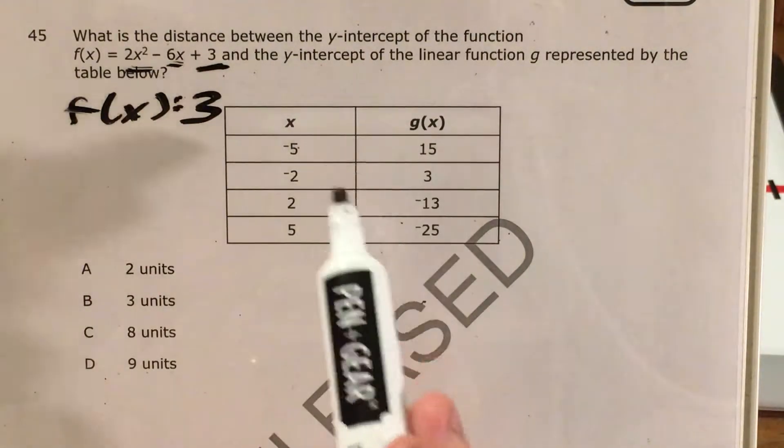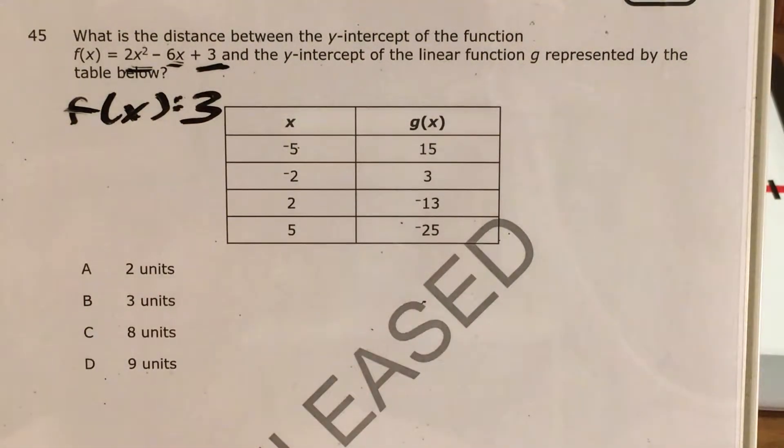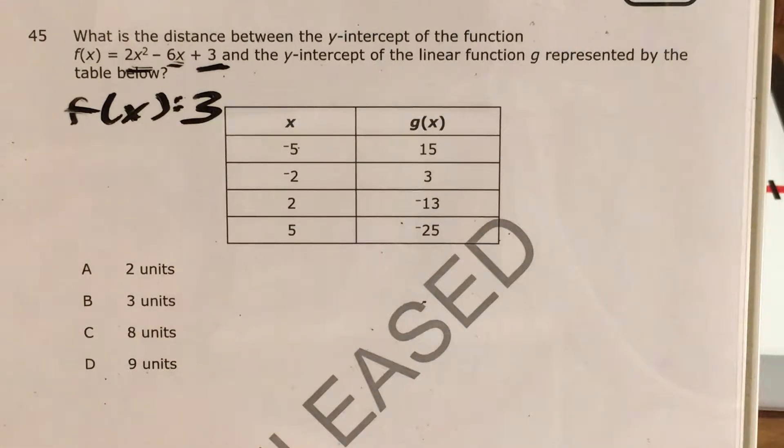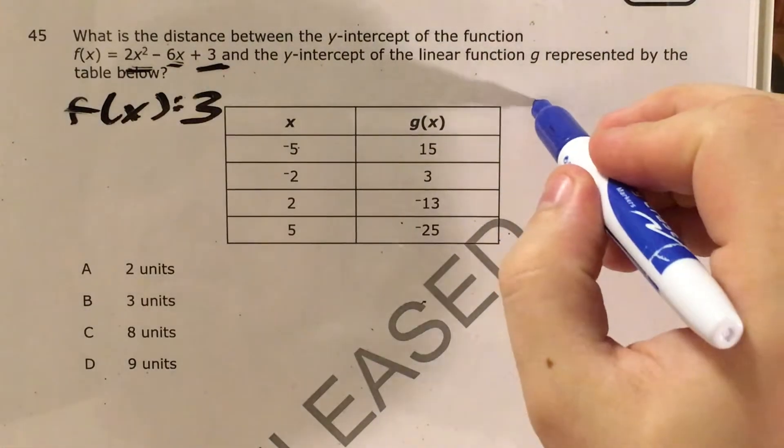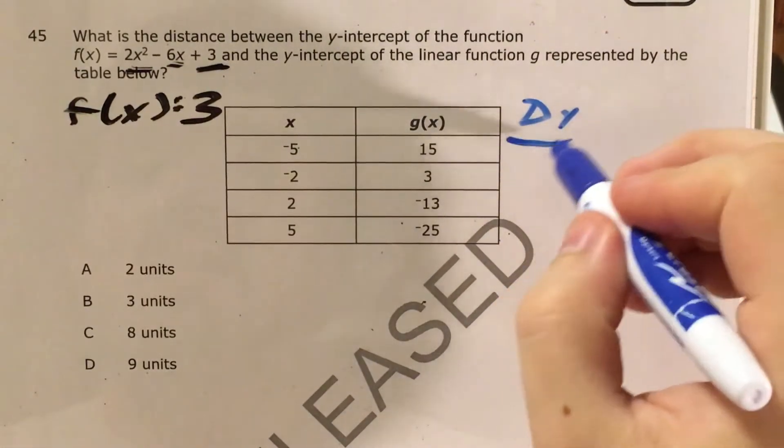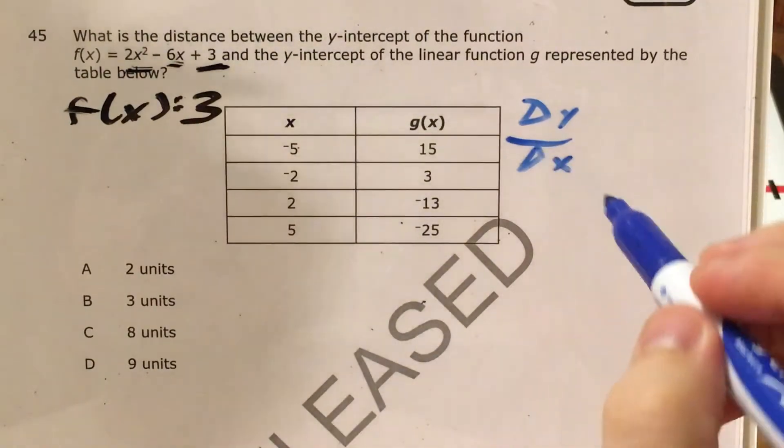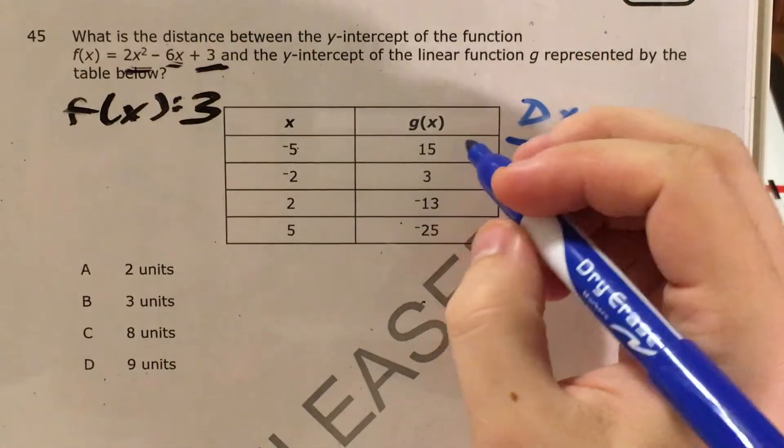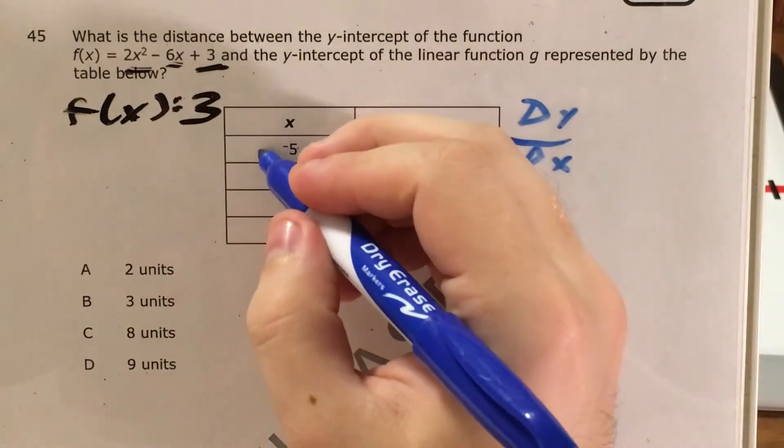Now let's look for the y-intercept in the table. To do that, we first need to find our slope, pick one of the points, and use point-slope form. Since this is a linear function, I only have to figure out my change in y and change in x for one interval. If I pick this interval,